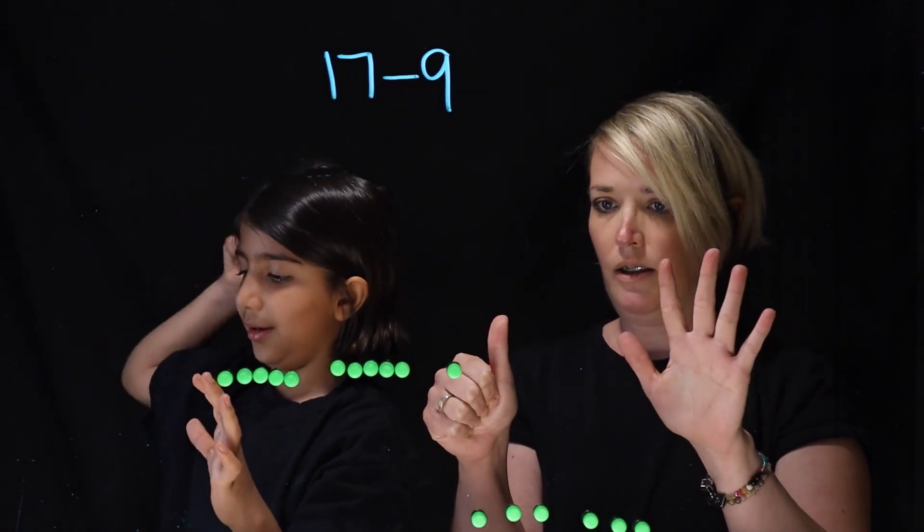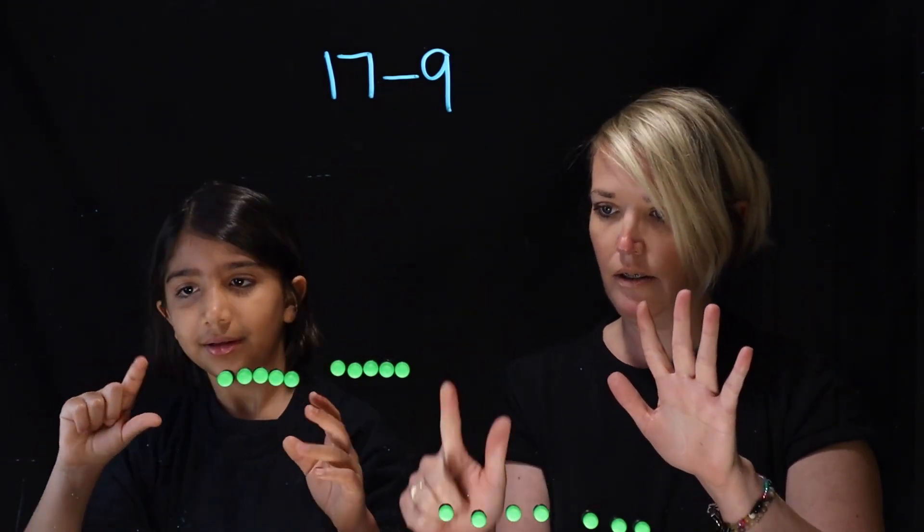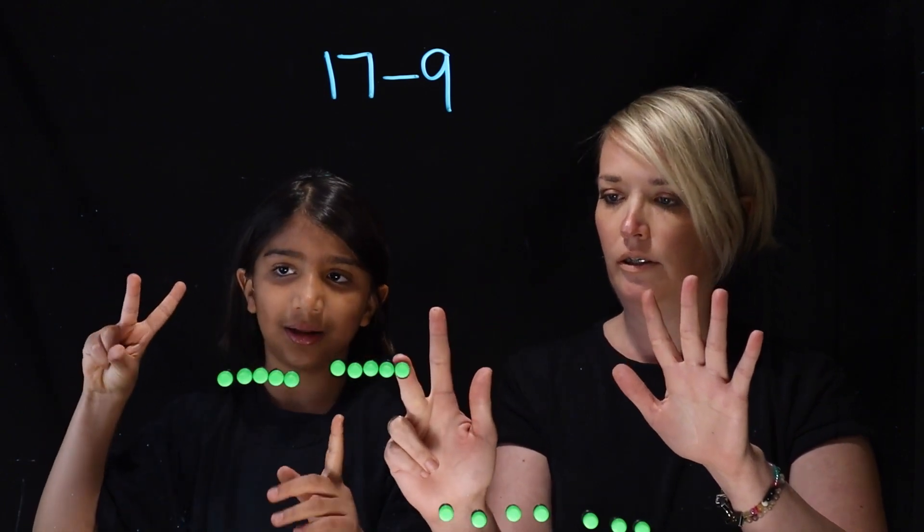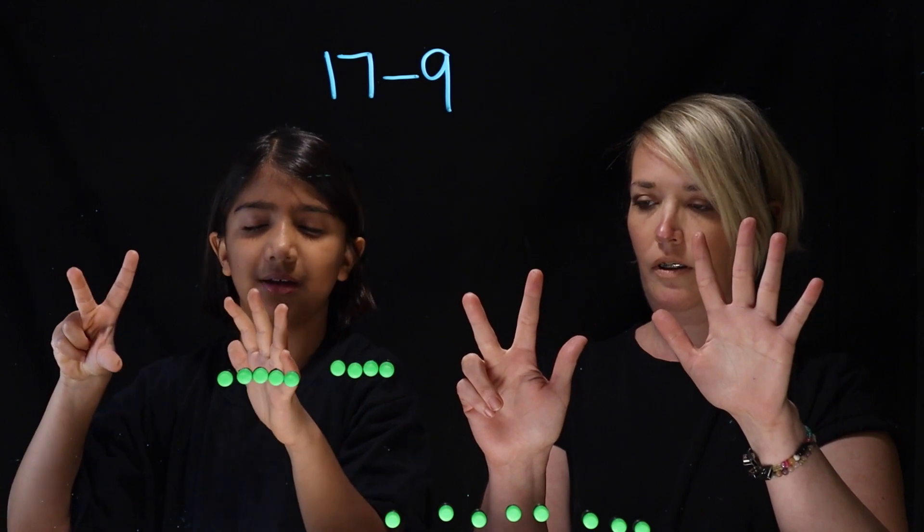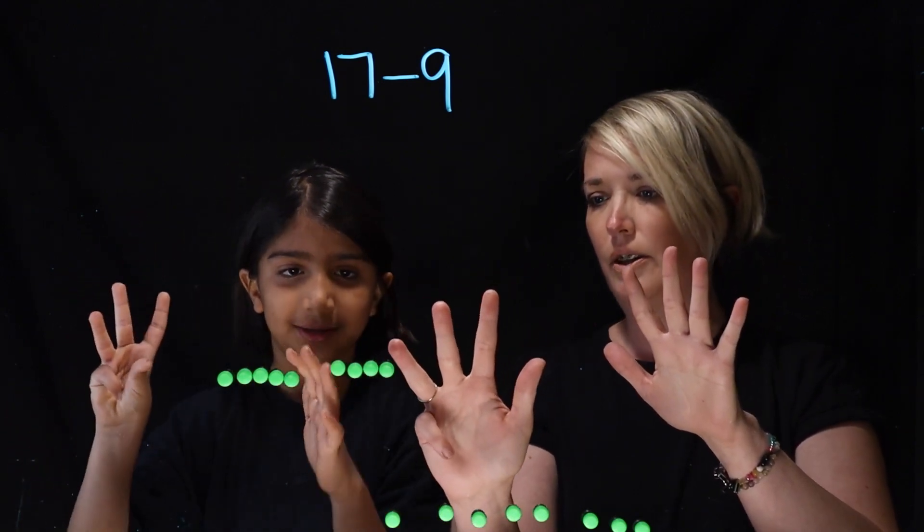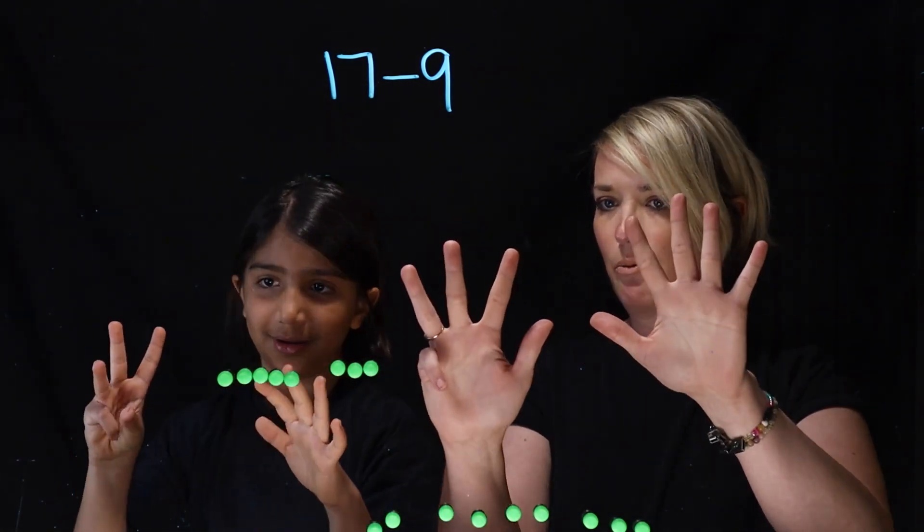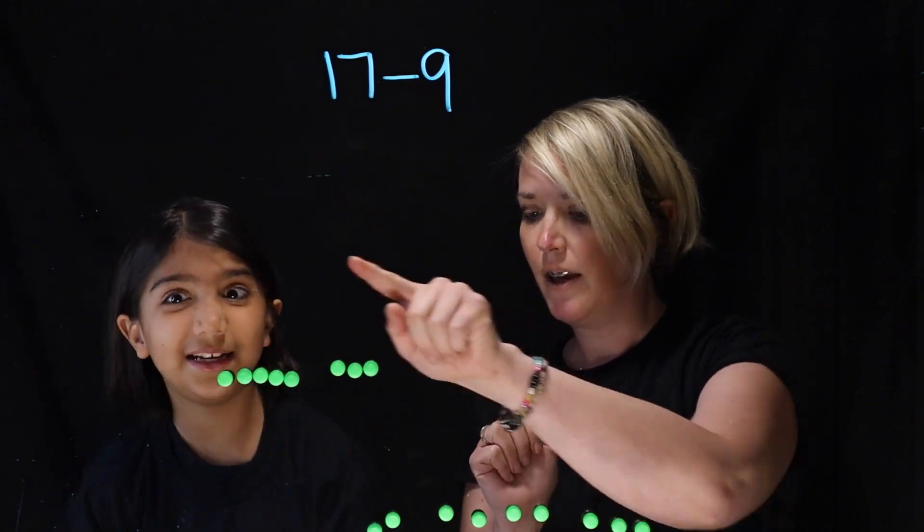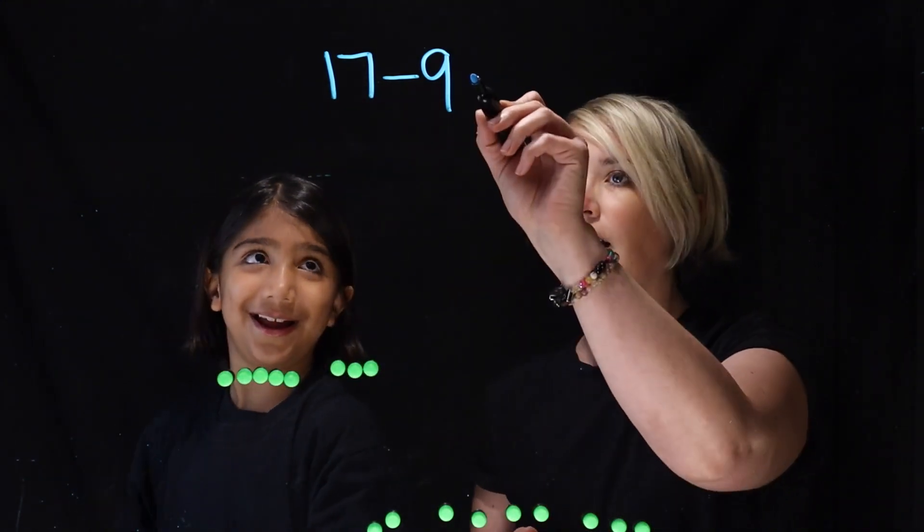10. Okay. 9. Yep, and we've got 9 there, right? Mm-hmm. And 8. And then we take one more away. For 8. So we made 9 on our fingers, and we're left with? 8. 8. So 17 minus 9 equals? 8. 8.